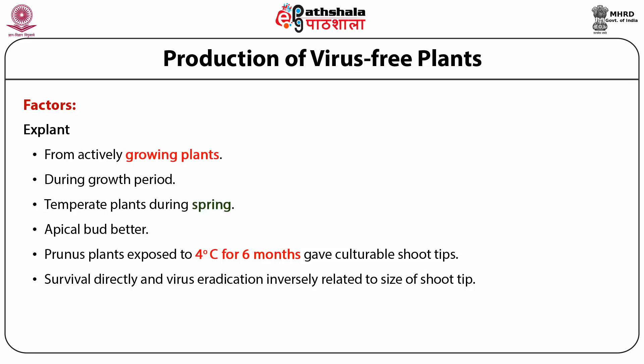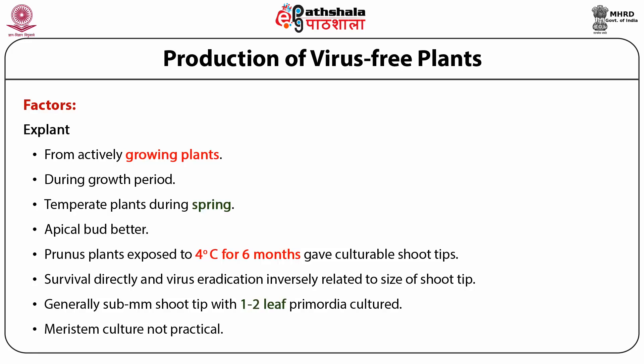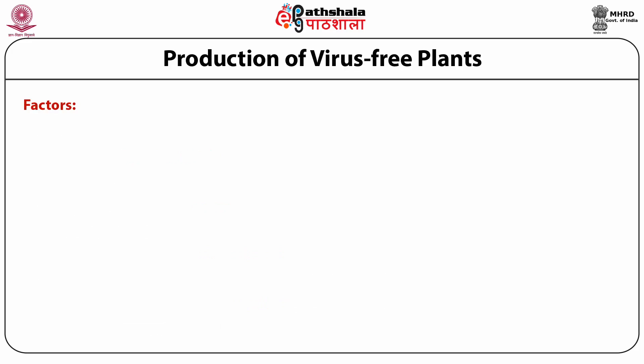On the other hand, if you take a larger shoot tip it may survive better, but the chances of virus eradication reduce. Therefore, generally a sub-millimeter shoot tip carrying the meristem and one to two leaf primordia is cultured. Culturing the meristem alone has been attempted to eradicate viruses but it is not a practical explant. As in all other cases in tissue culture, the genotype or donor plant always plays an important role in success or failure.